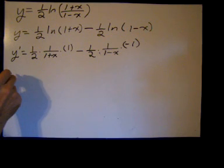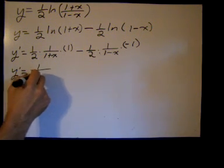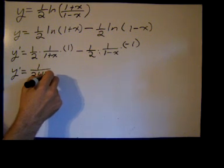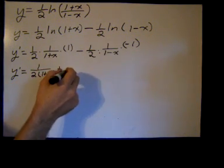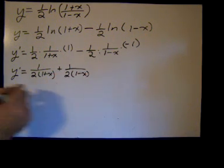So now I can simplify this a little bit. I get one over two times one plus x, negative times a negative is a positive, one over two times one minus x.